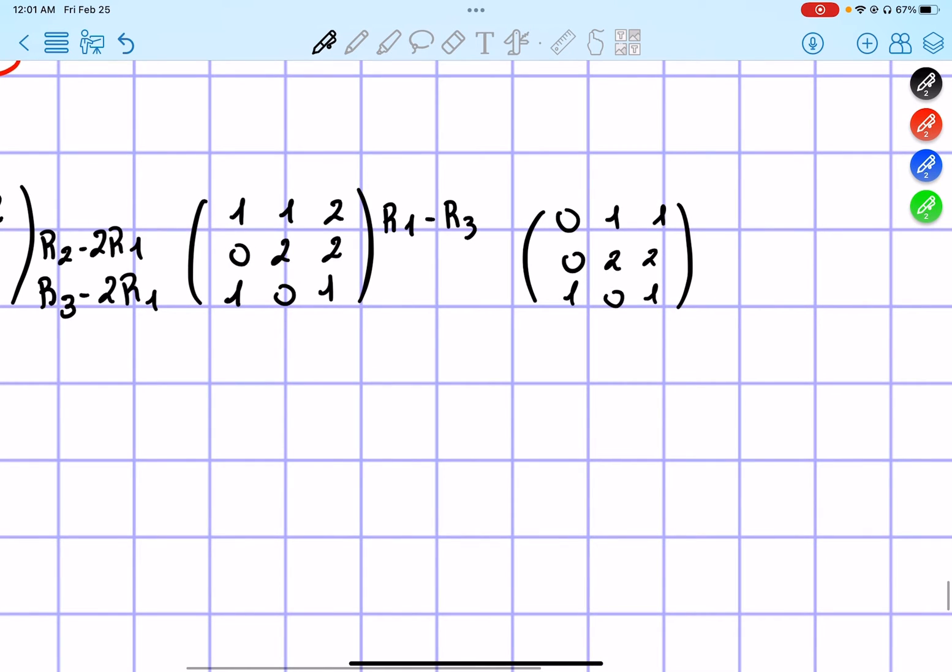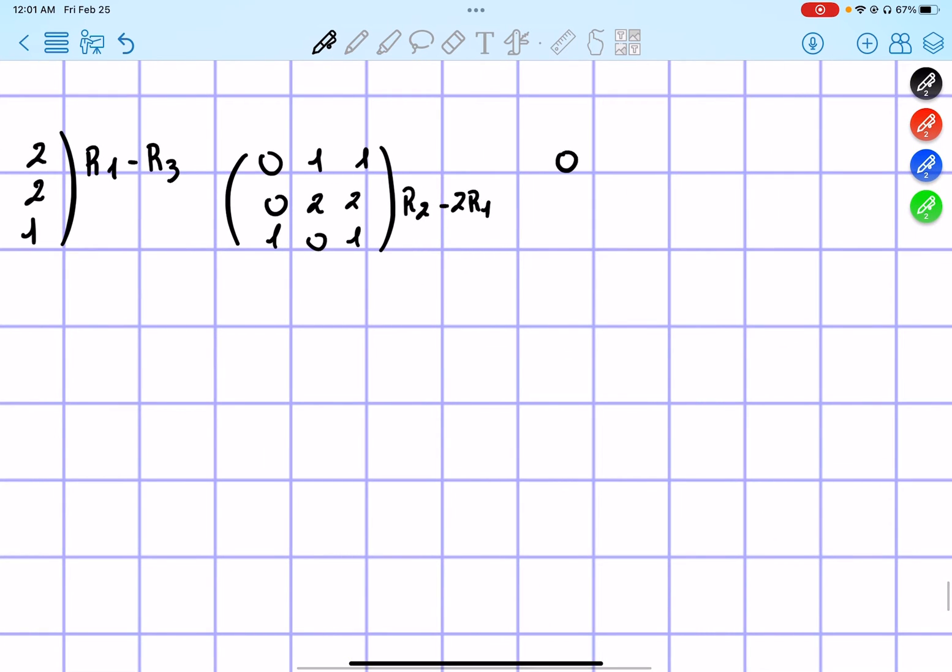So I just simply do row 2 minus 2 times row 1. And I get 0, 1, 1, 1, 0, 1, and then 0, 0, 0.